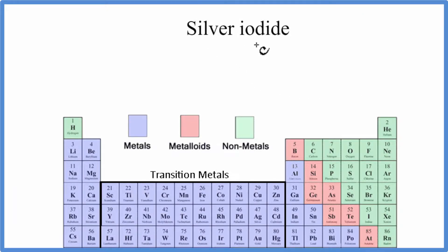To write the formula for silver iodide, we'll go to the periodic table. We look up silver, that's Ag, and then iodide. Iodine is what we're looking for, that's I.